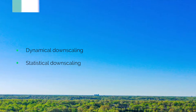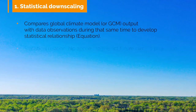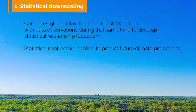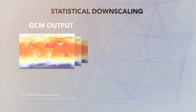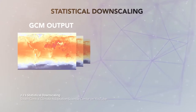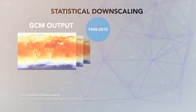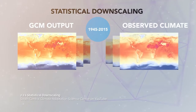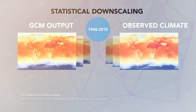Statistical downscaling compares GCM output for a particular period in the past with observations during that same time. By comparing model projections with actual climate data observations, a statistical relationship is established between global and regional climate patterns. This statistical relationship is then applied to predict future climate projections.